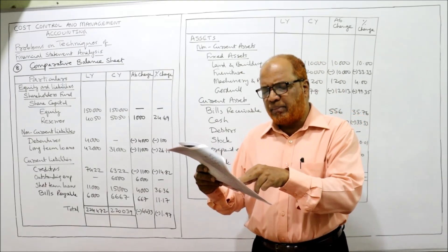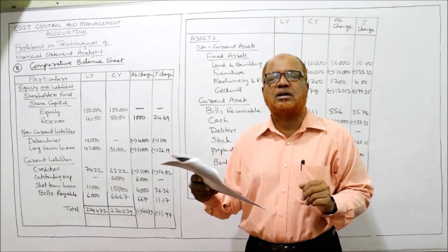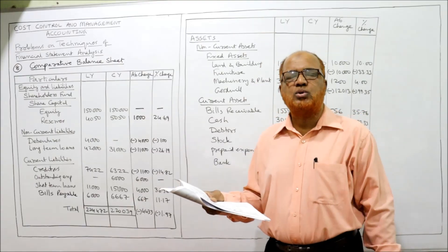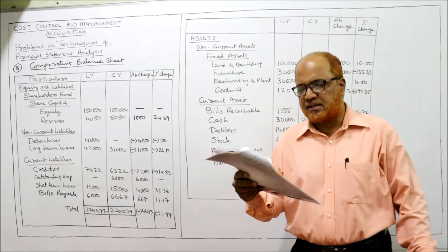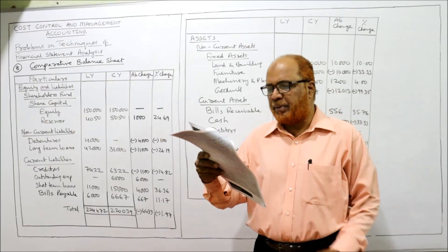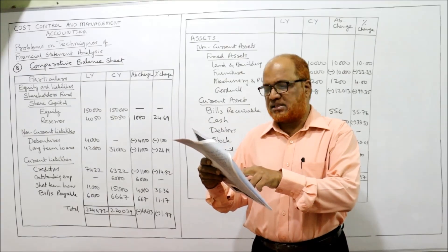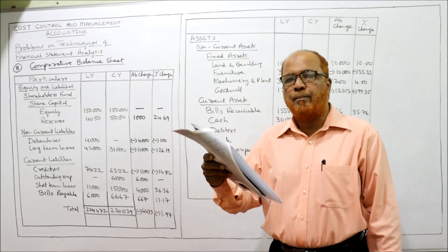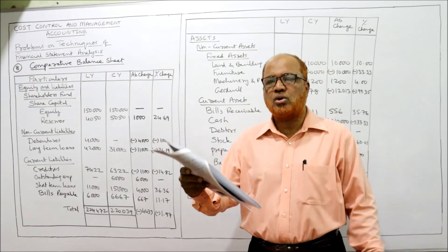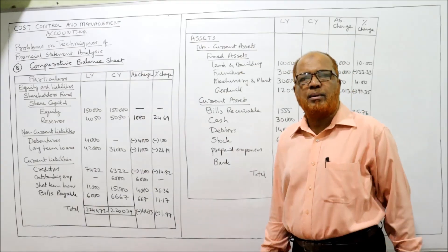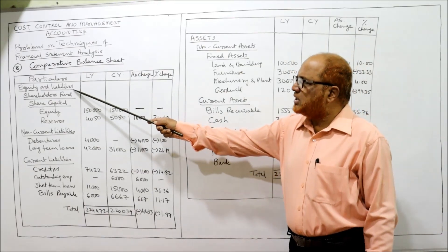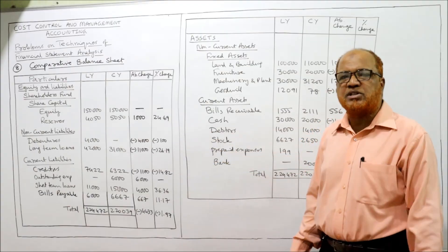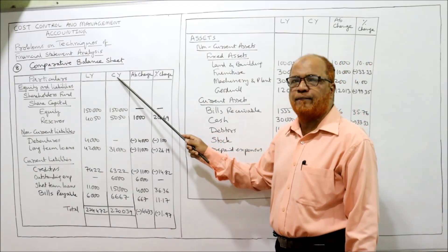Current liabilities include bills payable, creditors, outstanding expenses, and short-term loans. Assets are divided into two categories: non-current assets and current assets. Bills receivable, cash, debtors, stock, prepaid expenses, and bank are current assets. Land and building, furniture, machinery and plant, and goodwill are fixed assets under non-current assets. Bank is taken under current assets. Now see the format carefully — equity and liabilities, shareholders' fund, share capital. Columns are last year and current year since years are not specified.